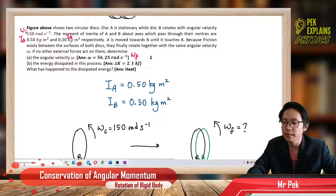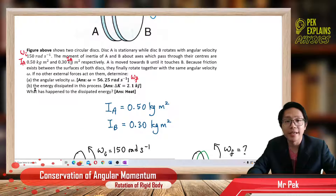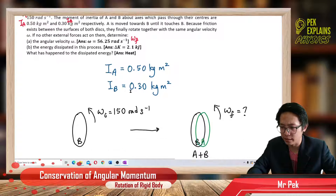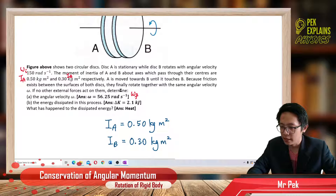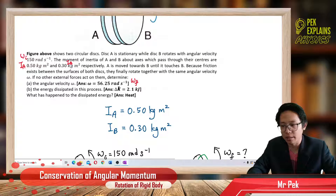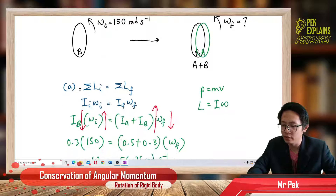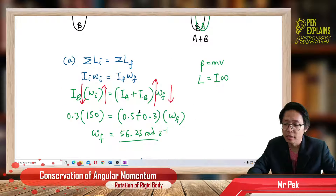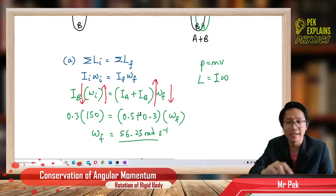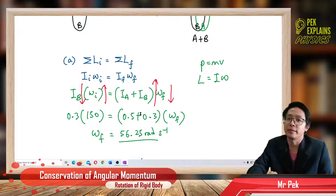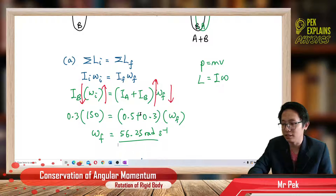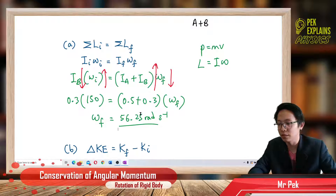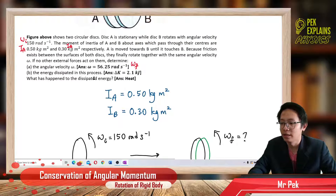Now let us look at the next question: the energy dissipated in this process. What is the energy dissipated? Initially they only have kinetic energy, so we just find the change in kinetic energy. The decrease in kinetic energy is converted to heat energy — that's the energy lost, the energy dissipated.